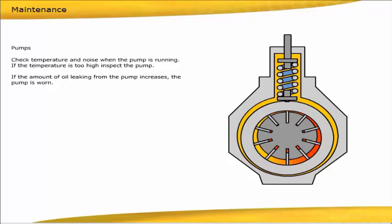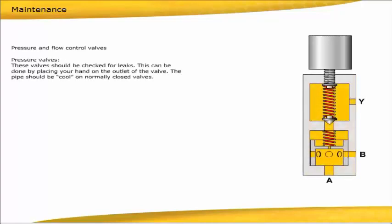Pressure and flow control valves. Pressure valves: These valves should be checked for leaks. This can be done by placing your hand on the outlet of the valve. The pipe should be cool on normally closed valves. Also check that the valve is correctly set and that the adjusting screw has not moved.